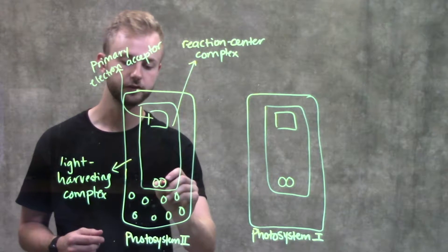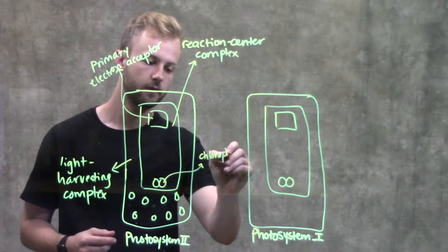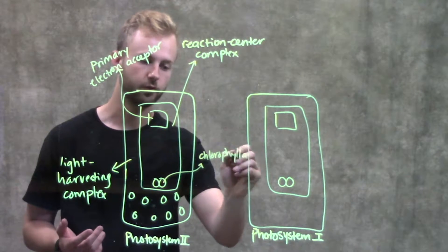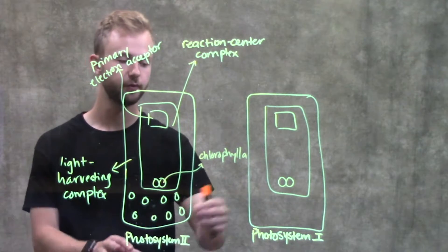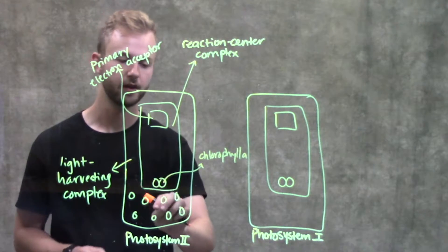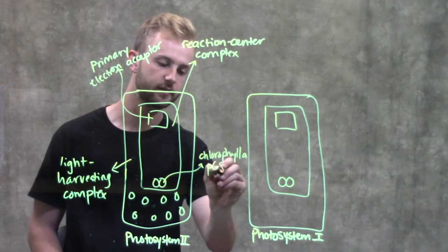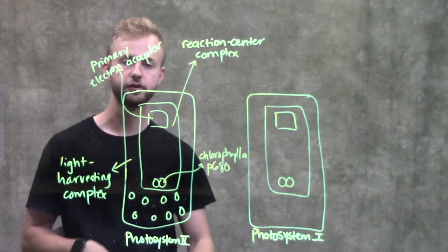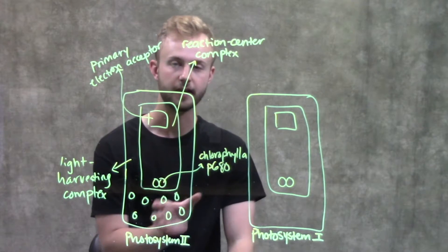These two molecules are molecules of chlorophyll A, which is a type of chlorophyll. What sets photosystem two apart from photosystem one is what wavelength these two molecules absorb. In photosystem two, these are P680 chlorophyll molecules because they absorb light at a wavelength of about 680 nanometers.